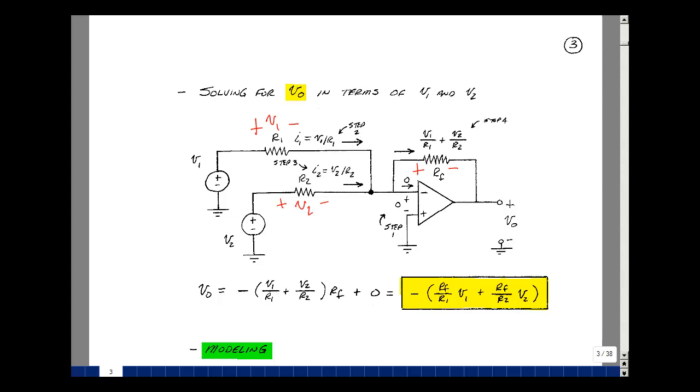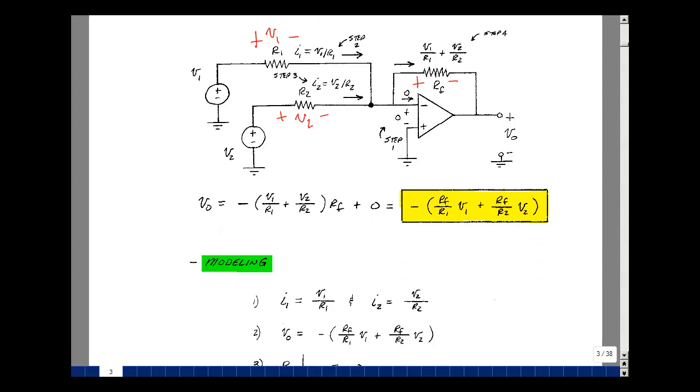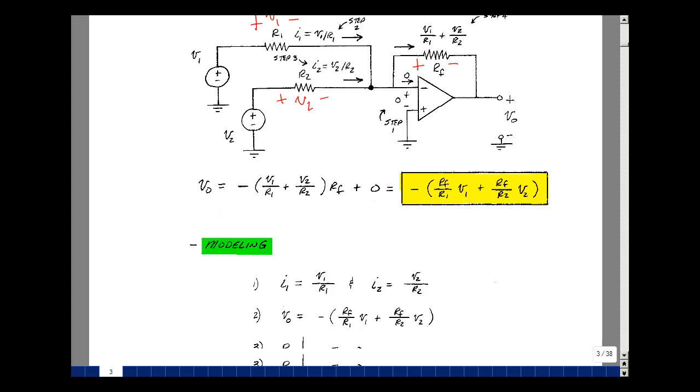We may not need a separate amplifier to do the inversion. We've got this built into the summer. Now let's model this like we did in ECE 201. Let's write down all the things that we know as true about this circuit. If I apply voltage V1, current I1 flows equal to V1 over R1. Likewise, for voltage source V2, I get current I2 equal to V2 over R2. This looks like Ohm's Law.